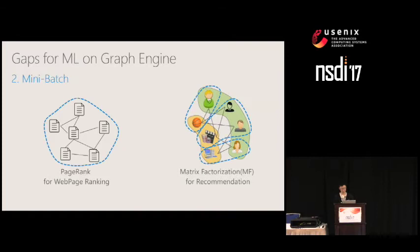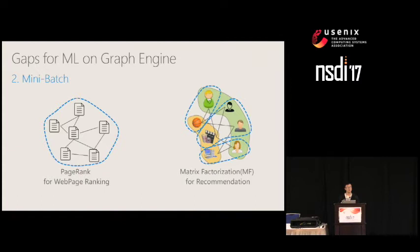Second, mini-batch is an important concept in machine learning that is missing in graph engines. Mini-batch means using just a subset of training samples to update the whole model within one batch. In graph engines, supporting machine learning means having the capability to process just a subset of the graph for a batch in arbitrary numbers of vertices and edges. However, existing graph engines do not support this important feature.